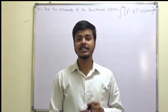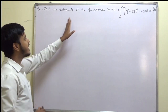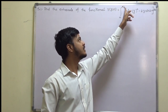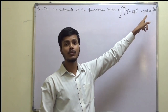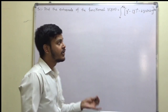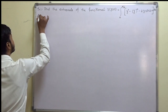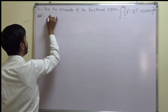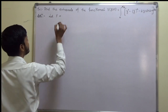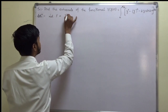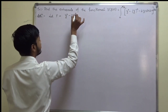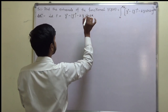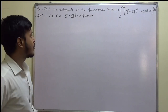So let us start with this problem. The problem says: find the extremals of the functional y = V[y(x)] = integral from 0 to π/2 of (y² − y'² − 2y sin 2x) dx. We can first write what is our function f, so let f = y² − y'² − 2y sin 2x. This is our function f.